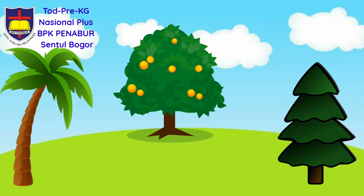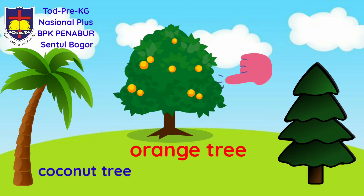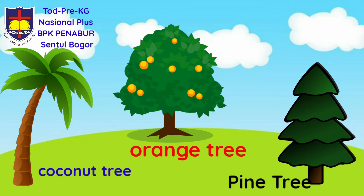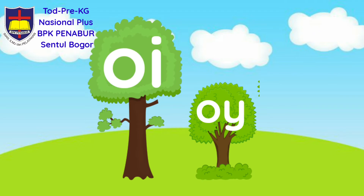Look at this. There are different kinds of trees. Do you know what tree this is? This is a coconut tree. How about this? Orange tree. And the last one is pine tree. Now let's read the words that you see on the tree. Do you still remember what sound this is? This is the sound 'oi'. And then this is O and I, and O and Y.